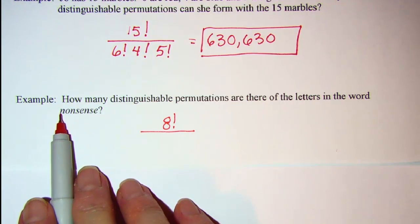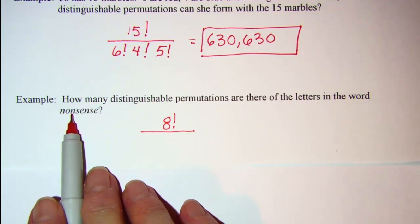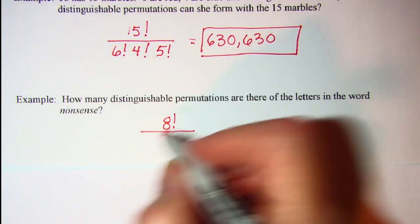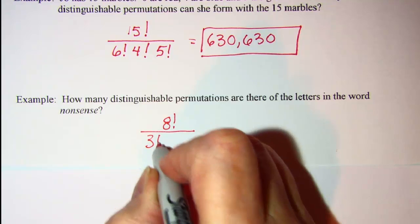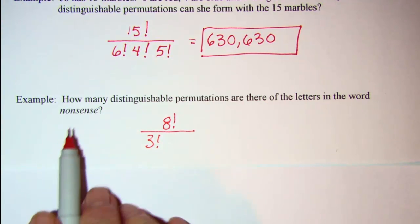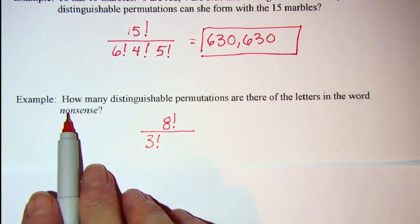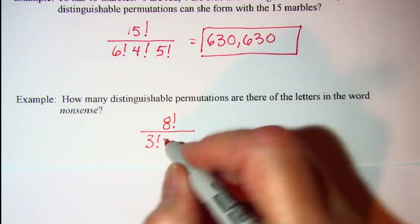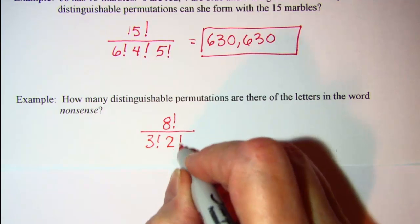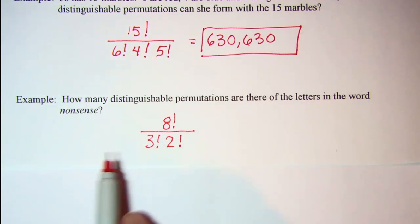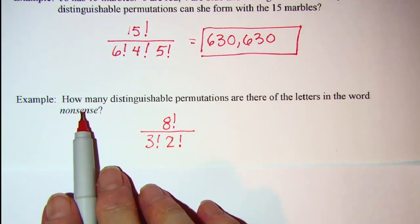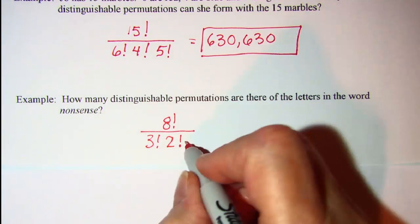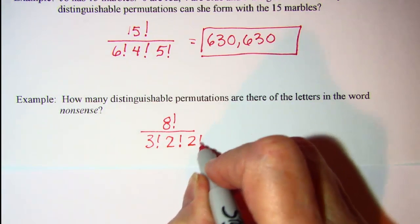Now my letter N, I have 1, 2, 3 of those, so that will be 3 factorial. I only have one O, so it's okay. I have 2 S's, that's 2 factorial, and then I have 2 E's, that's another 2 factorial.